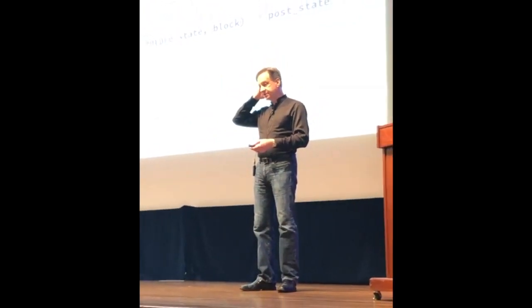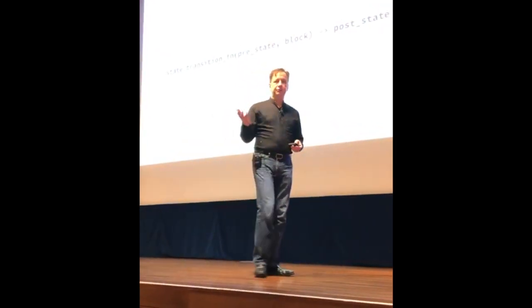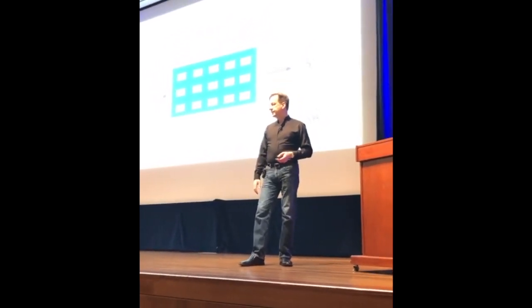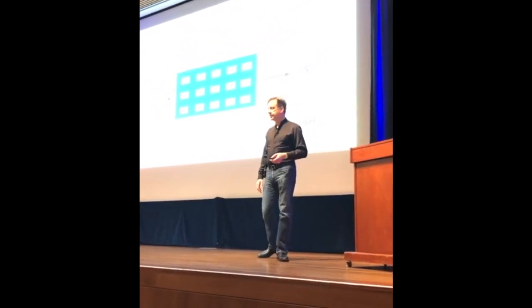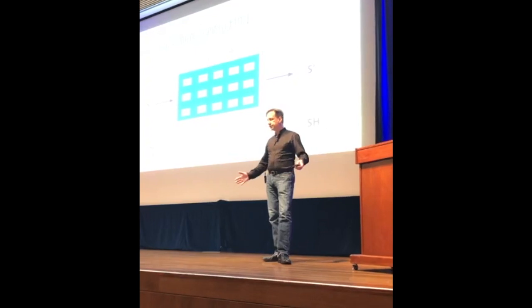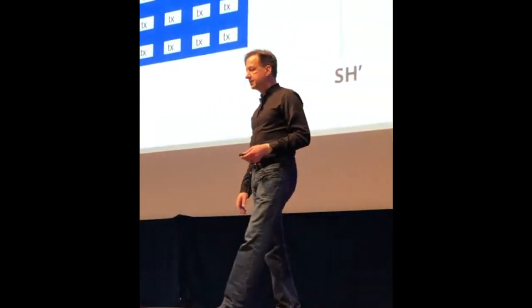For those who want to see it mathematically - what a state transition function is, because it's so key to the execution environment - it's a pure function, meaning it holds no state. Everything that it computes on is given to it as inputs. It has the pre-state root, it has the block which contains the transactions and any proofs of data required, and then it gives a post-state hash. Graphically, you take the state root in, run all the transactions through a reducing function, go through the Merkle Patricia tree, and get the new state root at the top.